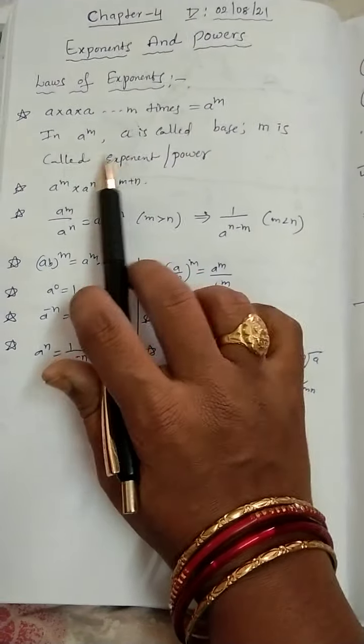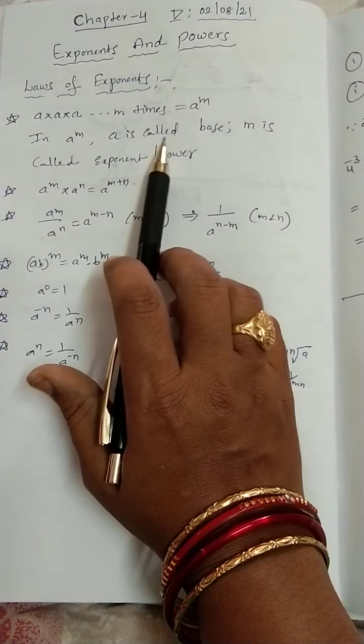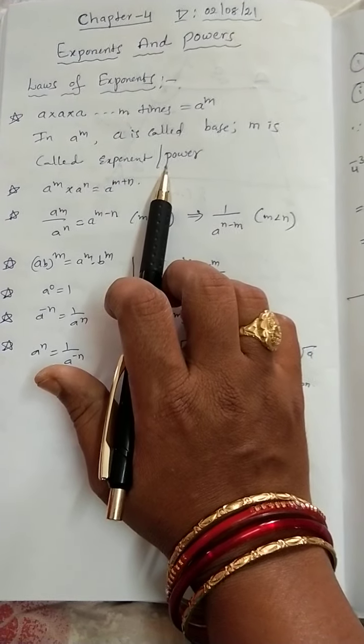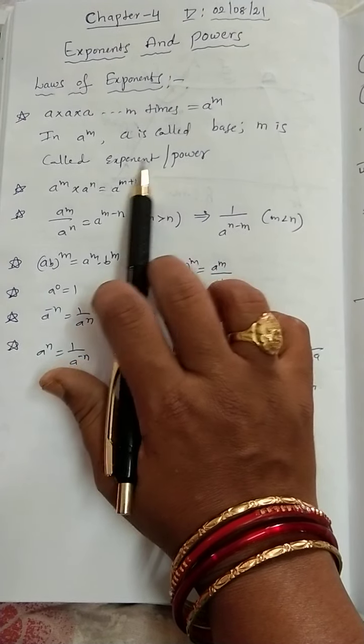So, in A power M, A is called the base, M is called the exponent or we can call as power also. Both are same meaning.